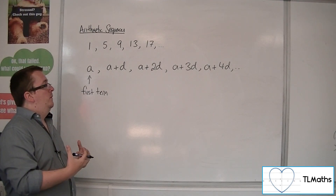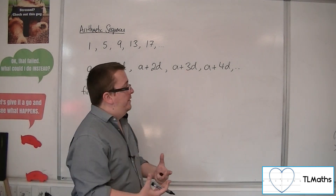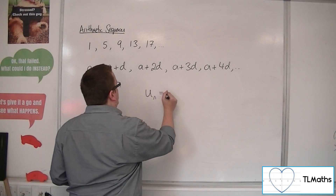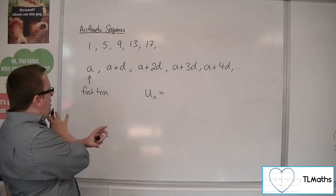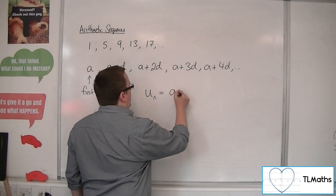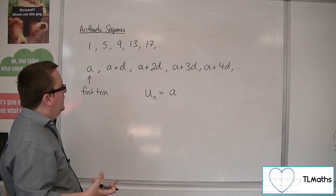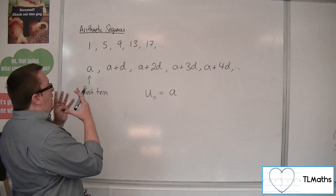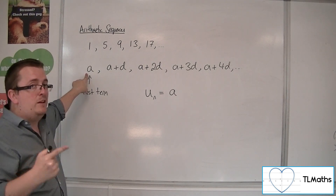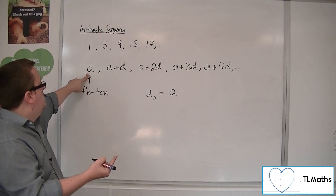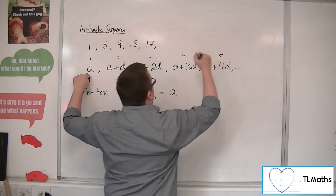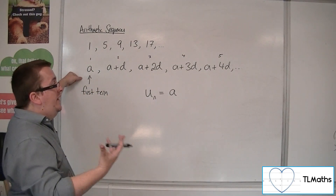Now, as part of that, what we're going to be wanting to do is to be able to write down an nth term for this. It makes sense that for our nth term it has an A in it, because all terms will have an A in it. We need something to go in front of the D. D is involved in all of them — you could say the first term is A plus 0D. Because that's your first term, that's your second, that's your third, that's your fourth, that's your fifth — you've always got one less D than the position.